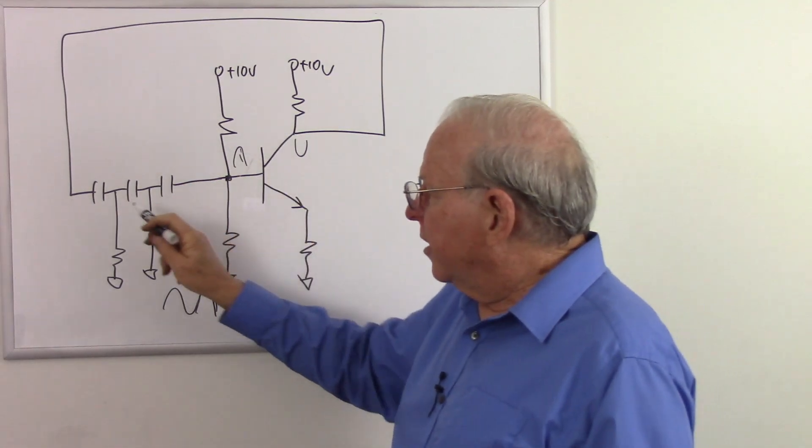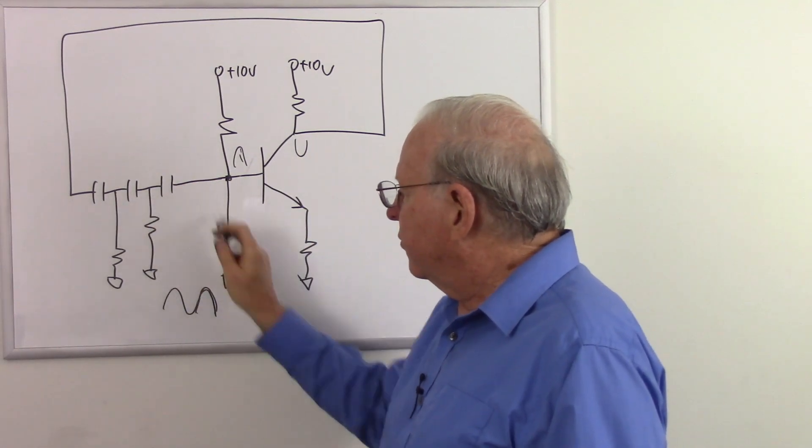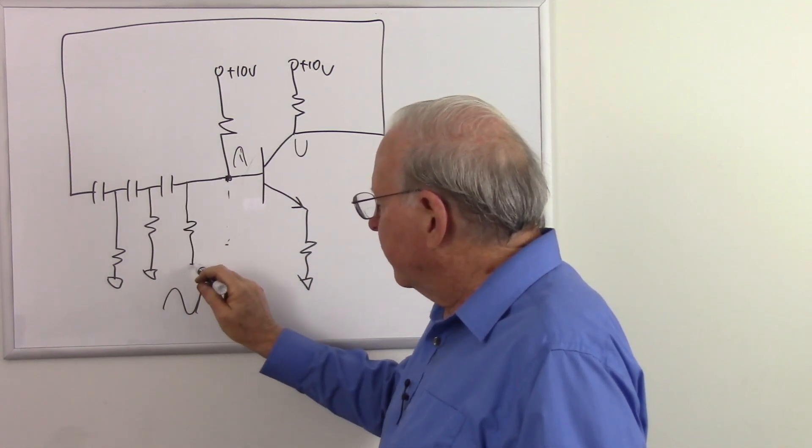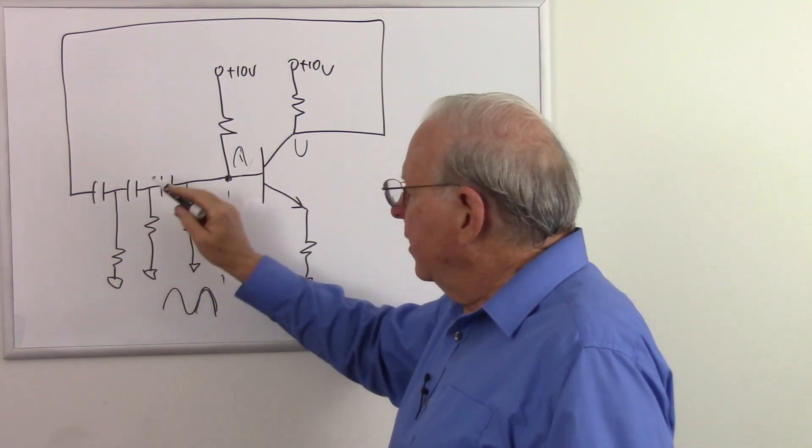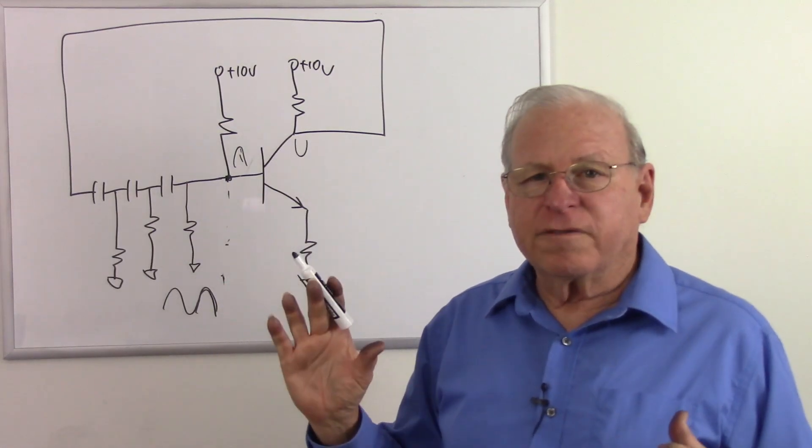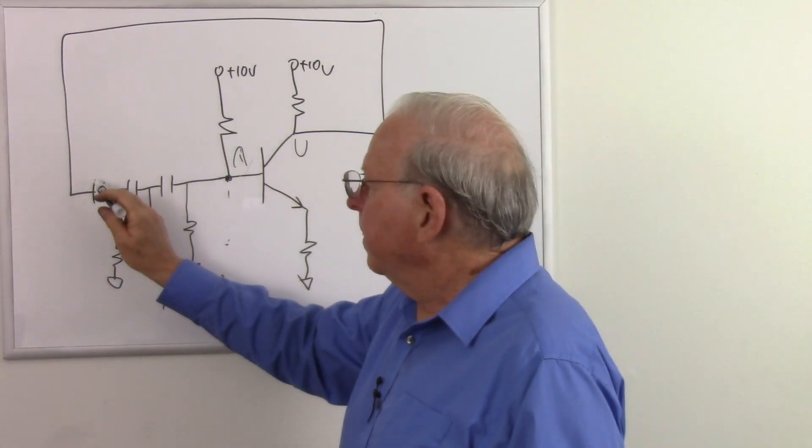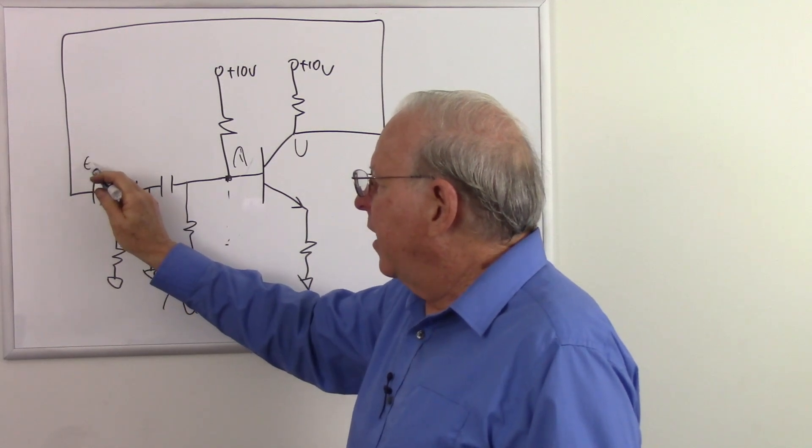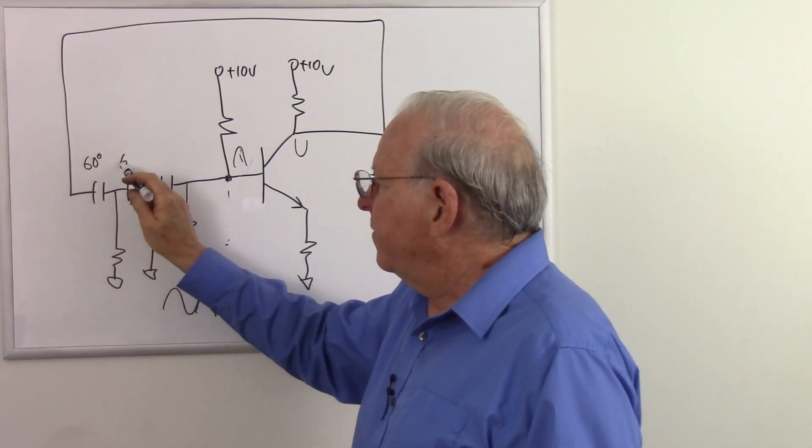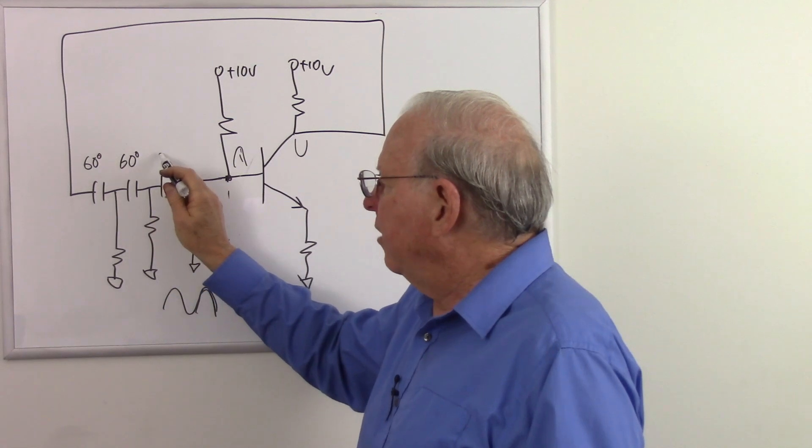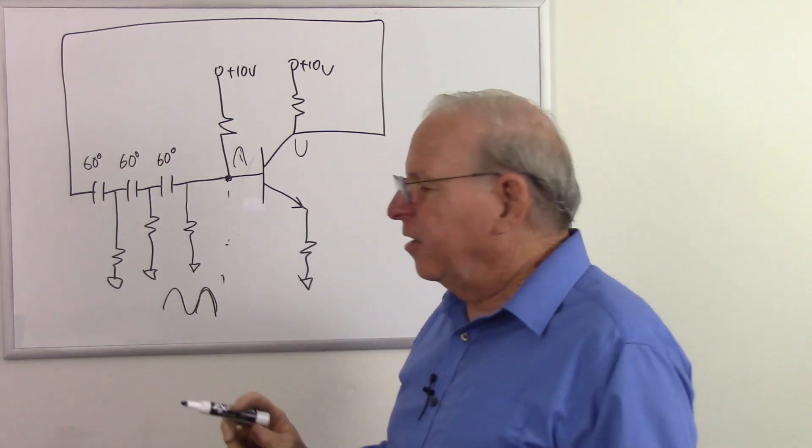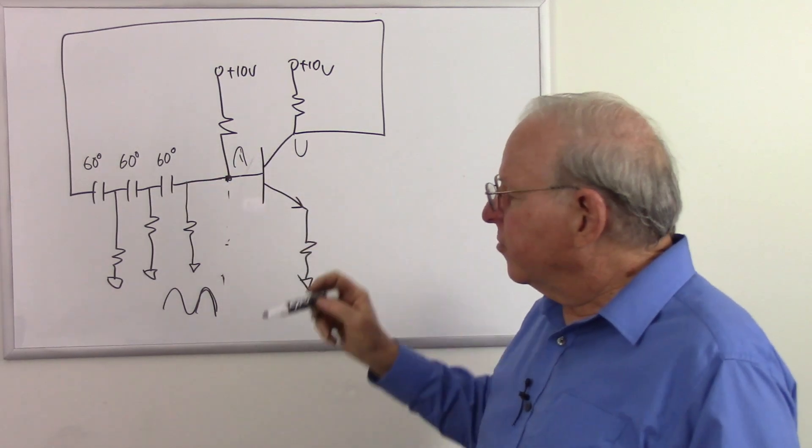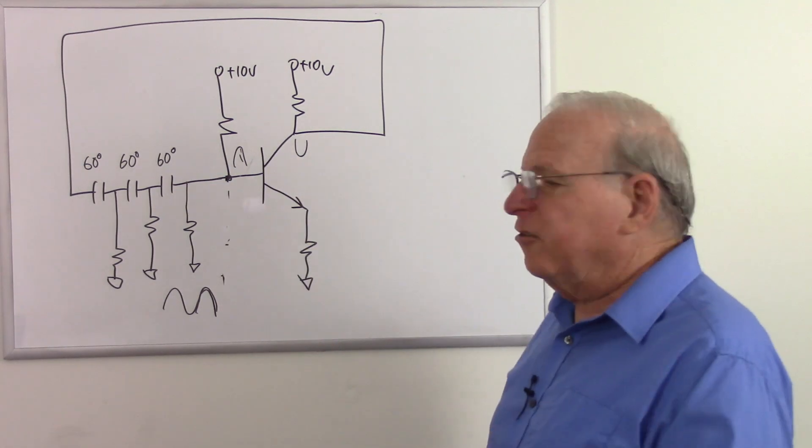So what we need to do is delay that feedback just at the right amount, and so at the frequency we want this to oscillate at, we want to calculate our phase shift for these three. We want these three RC circuits to have a total phase shift of 180 degrees. So we're going to have them equal capacitors and equal resistors such that each stage has 60 degrees of phase shift, and that will give us just the right amount of delay to make this oscillate. So there is your phase shift oscillator.